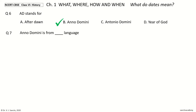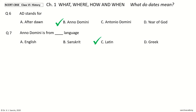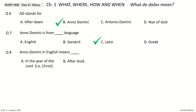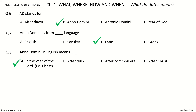Question 7. Anno Domini is from dash language. Your options: English, Sanskrit, Latin, Greek. Question 8. Anno Domini means — your options: after dusk, after common era, after Christ. And the answer is: in the year of the Lord, that is Christ.